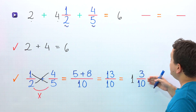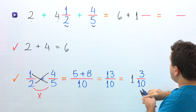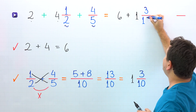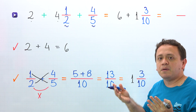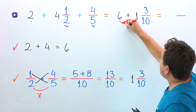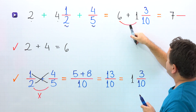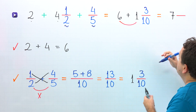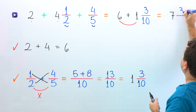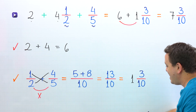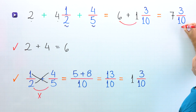So finally, we add 1 and 3 tenths to 6. We put over here plus 1 and 3 tenths. And here we have the sum of a whole number and a mixed number. Don't worry, we just need to follow the same steps we have seen in this video. First, we add the whole numbers: 6 plus 1 gives us 7. And finally, we add the fractions. However, we only have one fraction in this part of the problem, and that fraction is 3 tenths. In that way, 2 plus 4 and 1 half plus 4 fifths gives us 7 and 3 tenths.